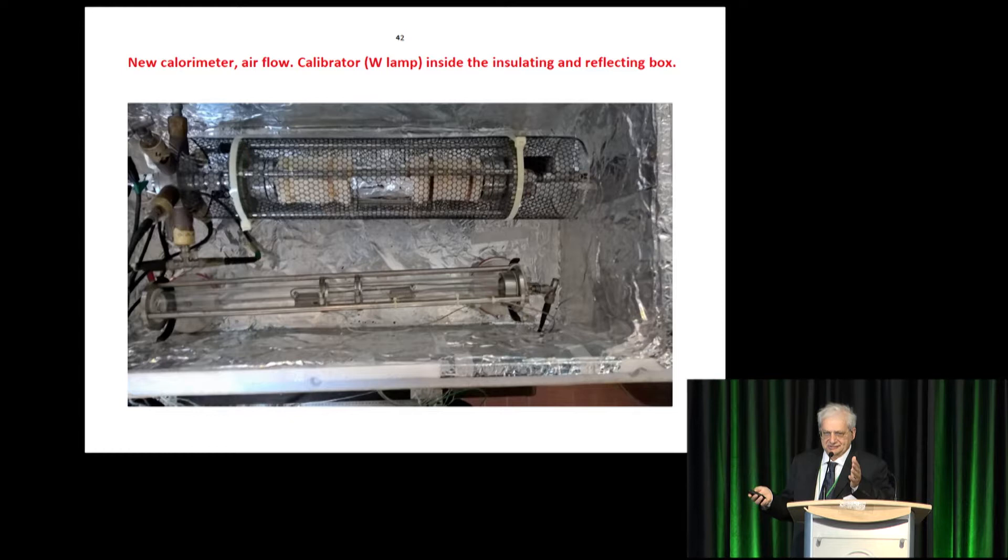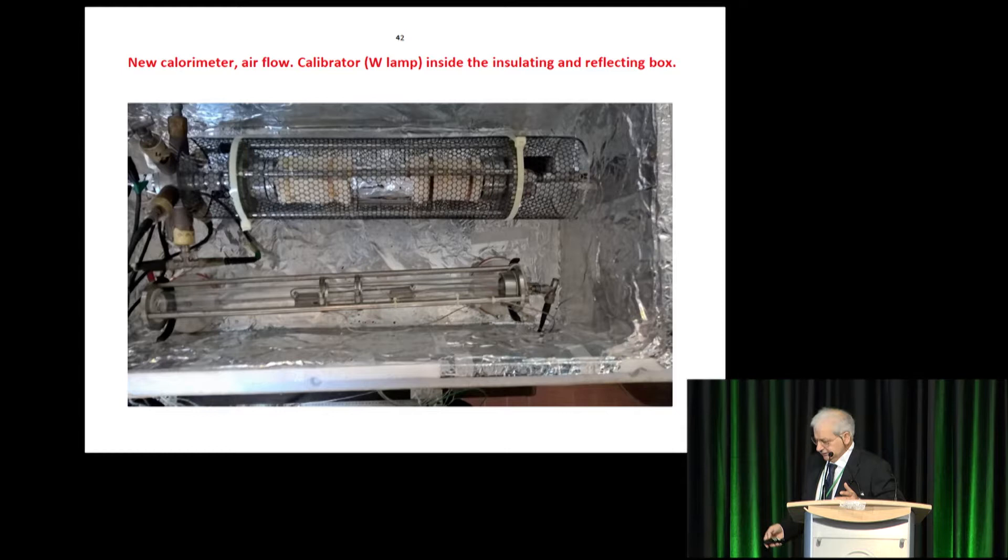This is the nuclear calorimeter. It is inside a big box. Insulated with aluminum for a screen. This is the reactor. This is the calibration. The calibration. This is the ratio between difference temperature out. Mean means divide power. The green is calibration. The second experiment was made using the Constantin 100 micron. And, so, the difference is really clear. Not doubt about.